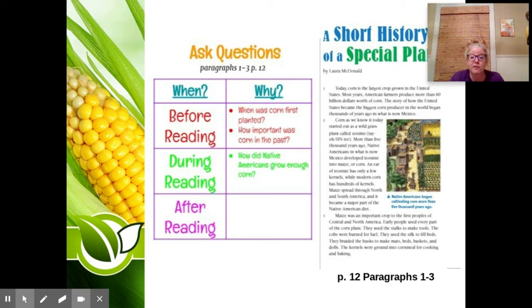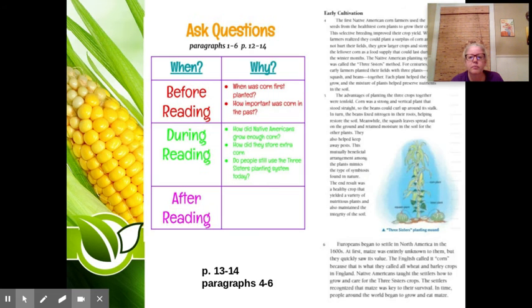Maize was an important crop to the first peoples of Central and North America. Early people used every part of the corn plant. They used the stalks to make roofs. The cobs were burned for fuel. They used the silk to fill beds. They braided the husks to make mats, beds, baskets, and dolls. The kernels were ground into cornmeal for cooking and baking. So I'm making a connection to social studies, and I'm wondering, how did they grow enough corn to survive? Because if they were using it for food, cooking, fuel and to make all these other things, how were they able to grow enough? That's a question I'm going to put in the during reading box.